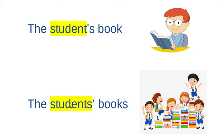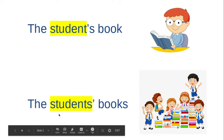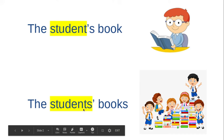In the second example, we've highlighted students plural, meaning more than one student. We would keep the S with student to show that student is plural, and we put the apostrophe after the S.